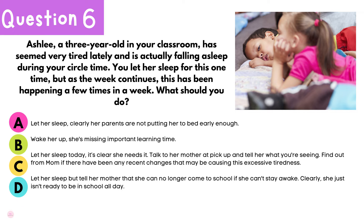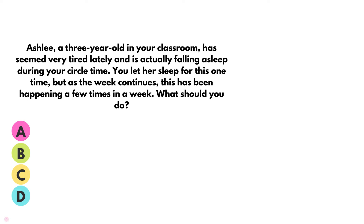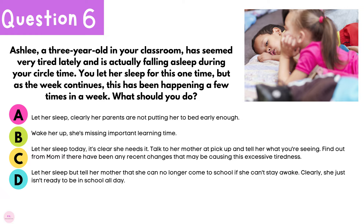Question 6: Ashley, a three-year-old in your classroom, has seemed very tired lately and is falling asleep during circle time. You let her sleep once, but as the week continues, this happens several times. What should you do? A, let her sleep — clearly her parents aren't putting her to bed early enough; B, wake her up — she is missing important learning time; C, let her sleep today, it's clear she needs it, then talk to her mother at pickup about what you're seeing; D, find out from her mom if there have been any recent changes causing this tiredness.